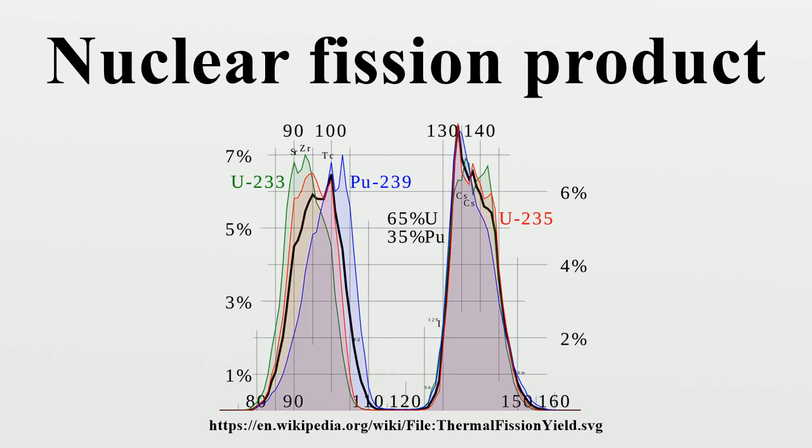After two to three years, Ce-144, Pr-144, Ru-106, Rh-106, and Promethium-147 are the bulk of the radioactivity. After a few years, the radiation is dominated by Strontium-90 and Caesium-137, whereas in the period between 10,000 and a million years it is Technetium-99 that dominates.